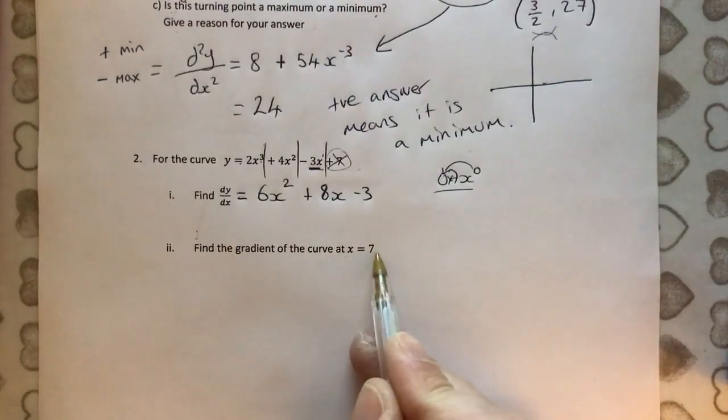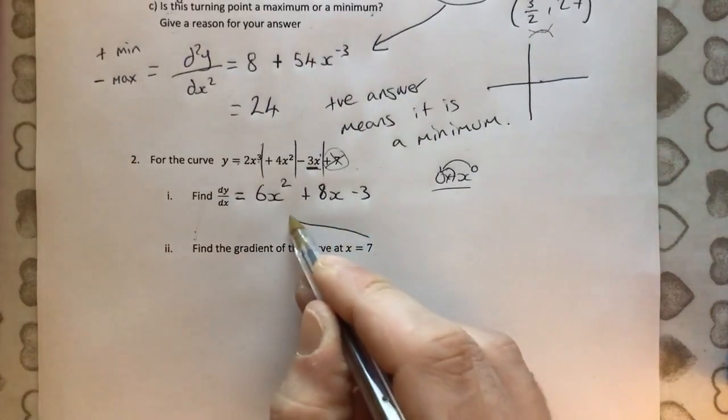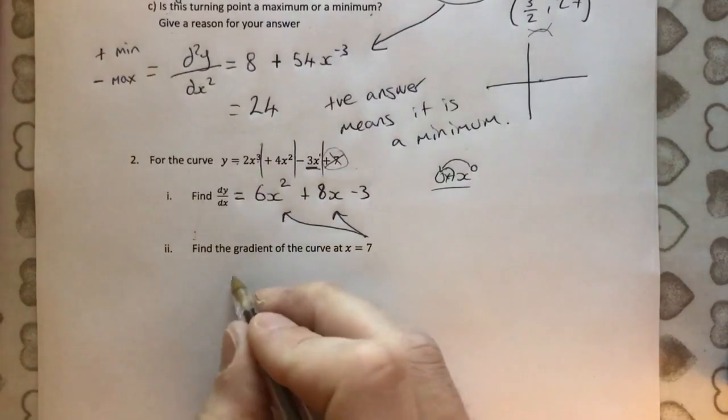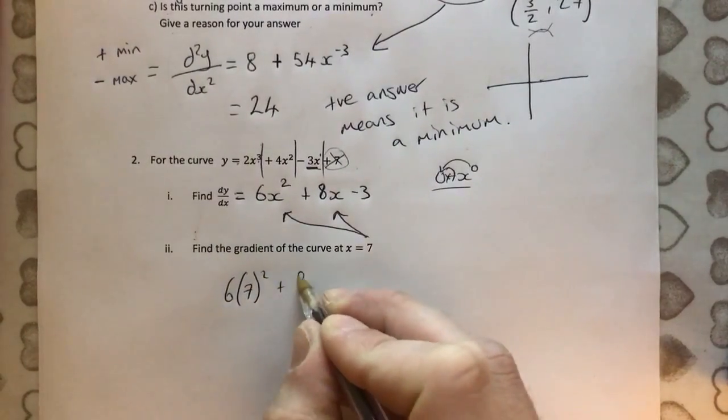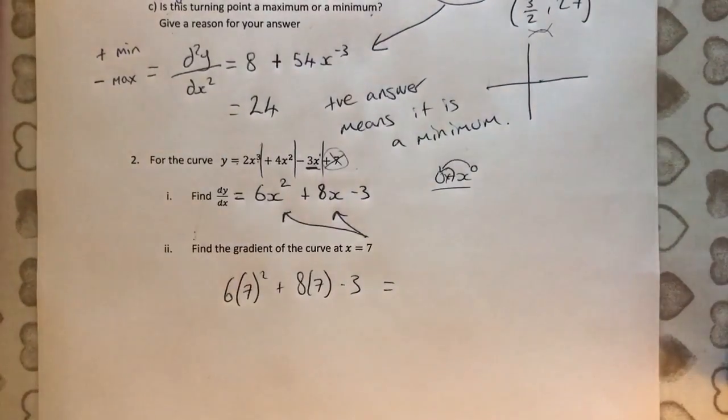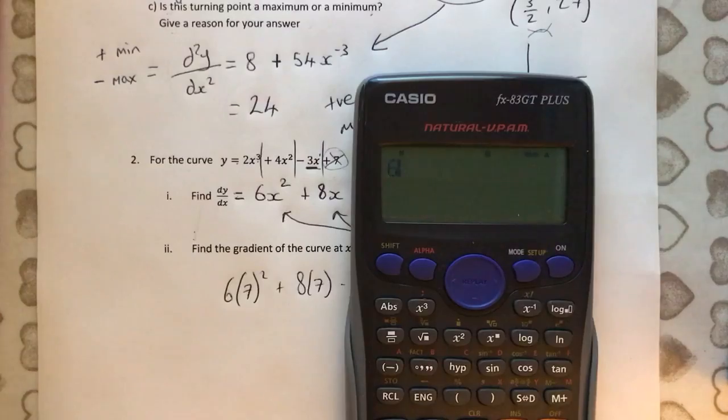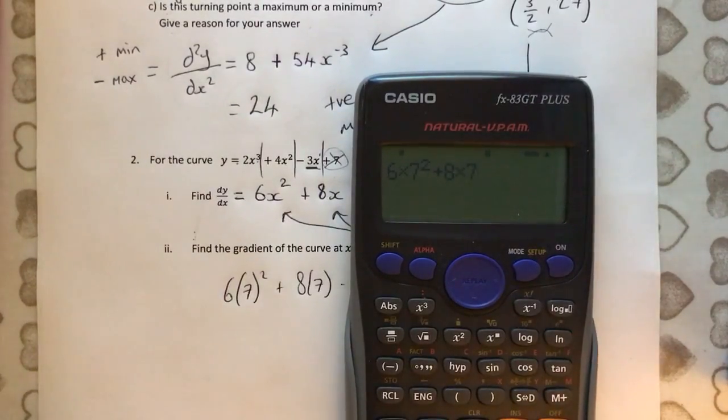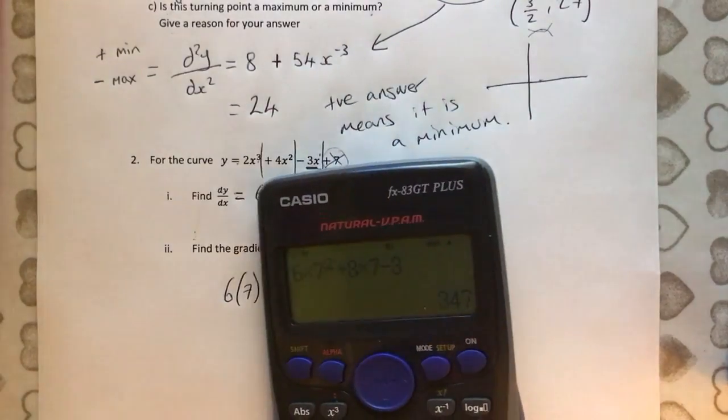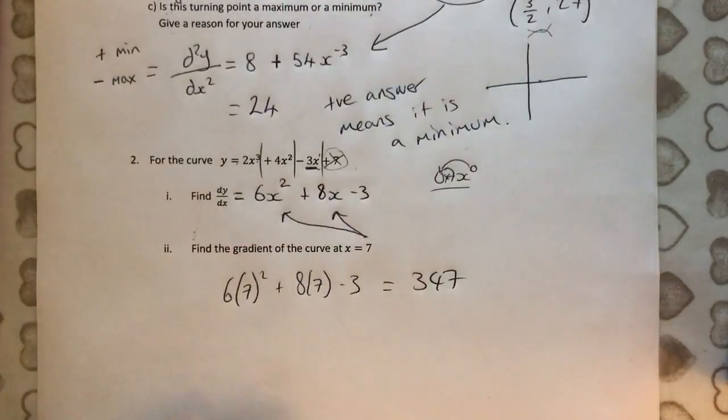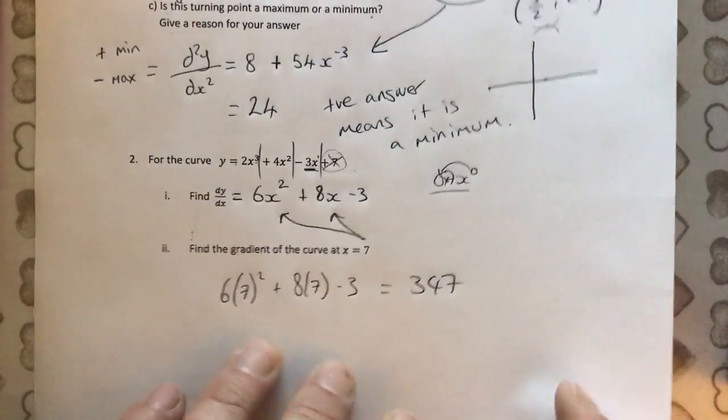Find the gradient of the curve at x equals 7. Well, let's just substitute 7 instead of x. 6 times 7 squared plus 8 times 7 minus 3. And that will tell us what the gradient is. So let's just do that. 6 times 7 squared plus 8 times 7 minus 3. And we get 347. Done. Much easier than the first question. Not so much thinking required.